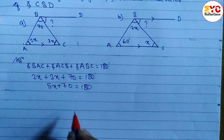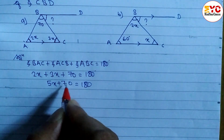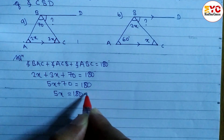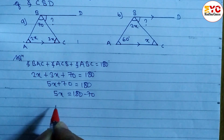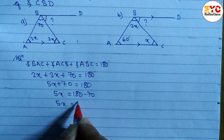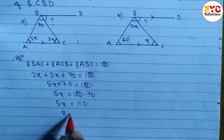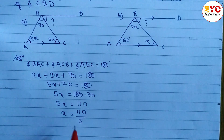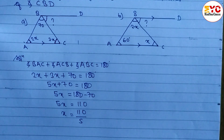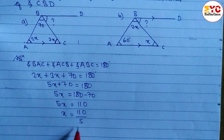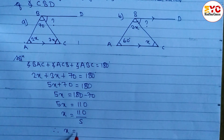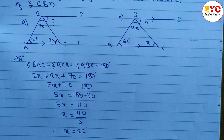These two are unlike terms, so we take 70 to the right side. So we can write 5x is equal to 180 minus 70, giving 5x is equal to 110. Therefore x is equal to 110 divided by 5, so x is equal to 22 degrees.